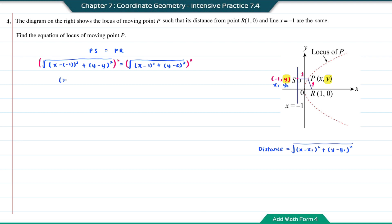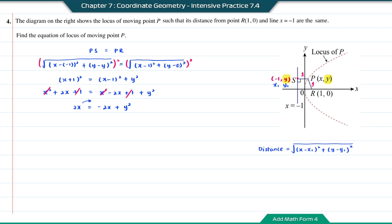The distance PS will be the square root of (X minus negative 1) squared plus (Y minus Y) squared. And the distance PR will be the square root of (X minus 1) squared plus (Y minus 0) squared. Squaring both sides: (X plus 1) squared equals (X minus 1) squared plus Y squared. Expanding: X squared plus 2X plus 1 equals X squared minus 2X plus 1 plus Y squared. Cancelling X squared and 1 from both sides and moving 2X to the right: Y squared minus 4X equals 0. This is the equation of the locus of moving point P.